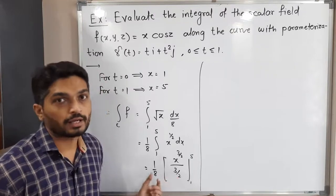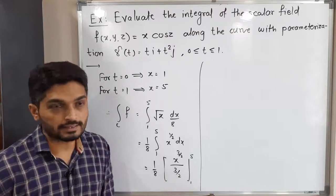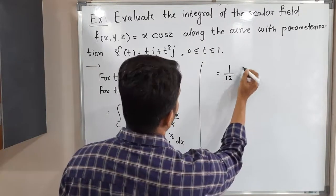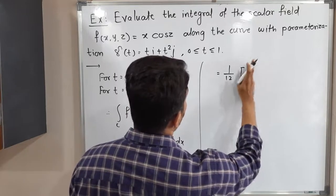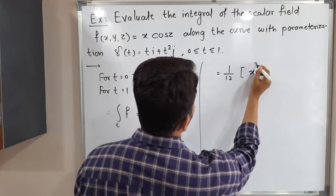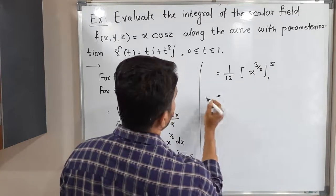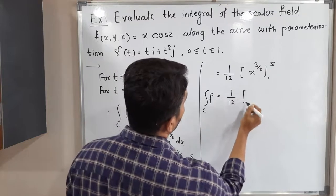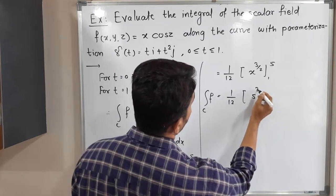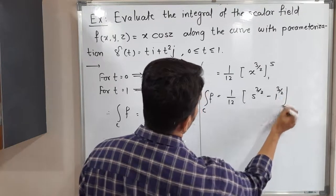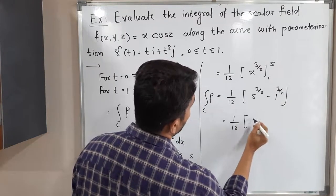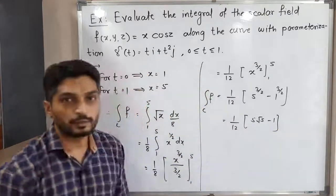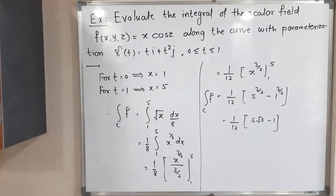Simplifying: the 2 from the (3/2) and the 8 cancel to give 4, so 3 × 4 = 12, yielding (1/12)[x^(3/2)]₁⁵. Evaluating: (1/12)(5^(3/2) − 1^(3/2)) = (1/12)(5√5 − 1). This is the required answer.